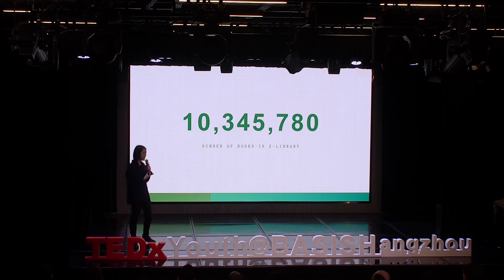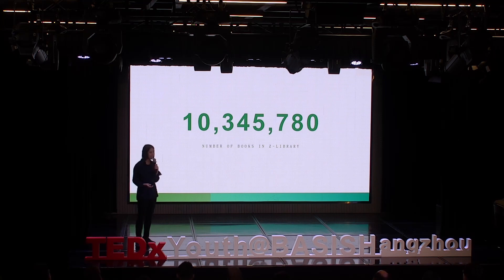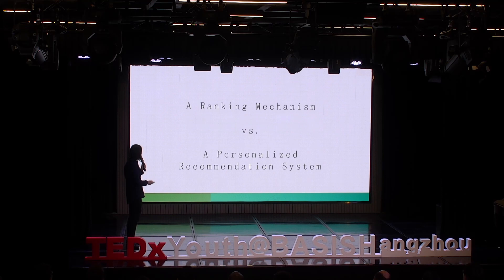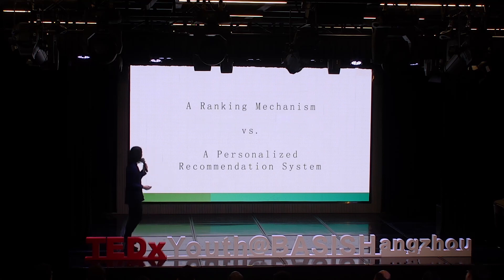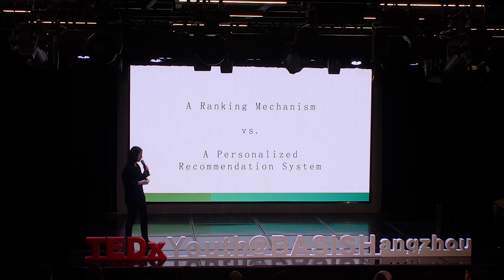Facing this large volume of information, it sometimes poses a challenge for us to retrieve information efficiently and find content of interest, including the next book to read. Here I present two solutions. The first one is a ranking mechanism, seen on some parts of the internet where we have the most popular books.